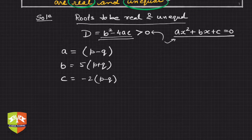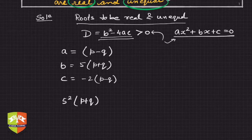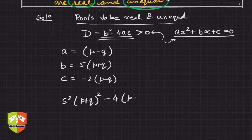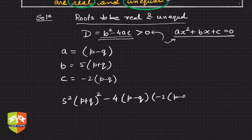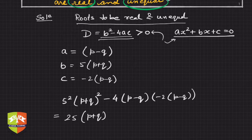Now let us find the value of D. Here D = 5²(p+q)² - 4 × a × c, where a is (p-q) and c is -2(p-q). So it is nothing but 25(p+q)² minus 4 × (p-q) × (-2(p-q)).